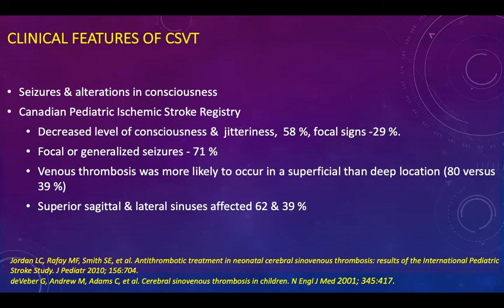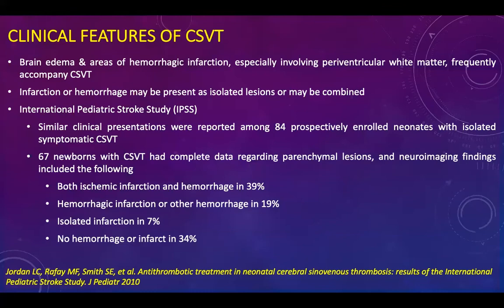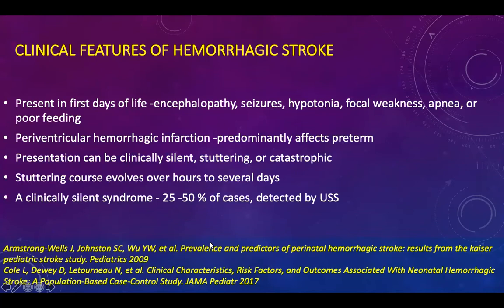Seizures and altered consciousness are common in CSVT. In a Canadian Pediatric Ischemic Stroke Study, decreased level of consciousness and jitteriness were found in 58%, and focal signs in up to 30%. Superior sagittal sinus was involved in 62%, and lateral sinuses were affected in about 40%. In an international pediatric stroke study among 84 prospective neonatal units with isolated symptomatic CSVT, both ischemic infarction and hemorrhage were present in around 39%, hemorrhagic infarction or other hemorrhage in 19%, and no hemorrhage or infarct in around 34% of cases.